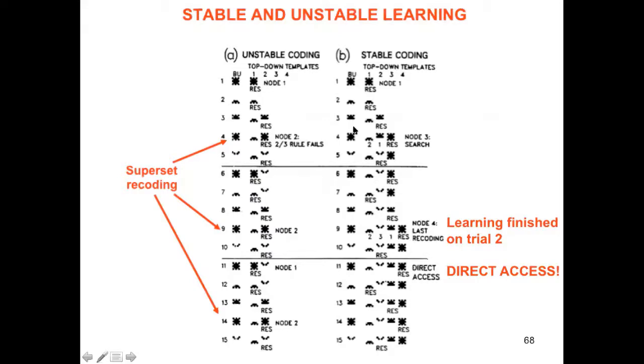If you do have the ART matching rule, learning is finished by the second trial here. But if you remove the ART matching rule, then, for example, A is first coded by category one, then by category two, then by category one, then by category two. You have superset recoding in the prototypes of the single pattern A, showing catastrophic forgetting.